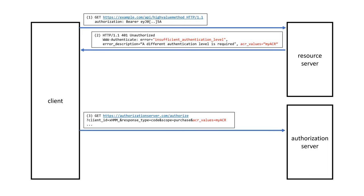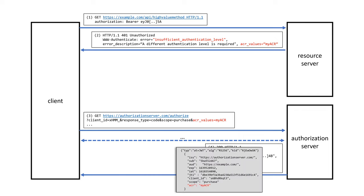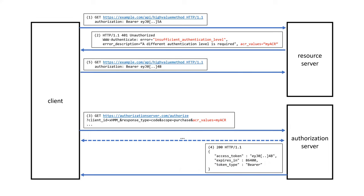At this point I just do my usual authorization code flow, and I make sure I include the ACR value that was in the challenge. If it was max_age, also max_age. Then we do the usual dance — we get back the code, we hit the token endpoint and similar, and get back a new access token which this time includes the ACR claim. Then we just repeat our call with the new token, and success — hopefully.